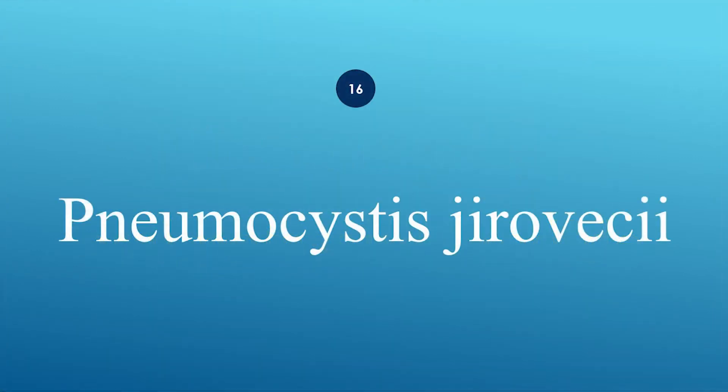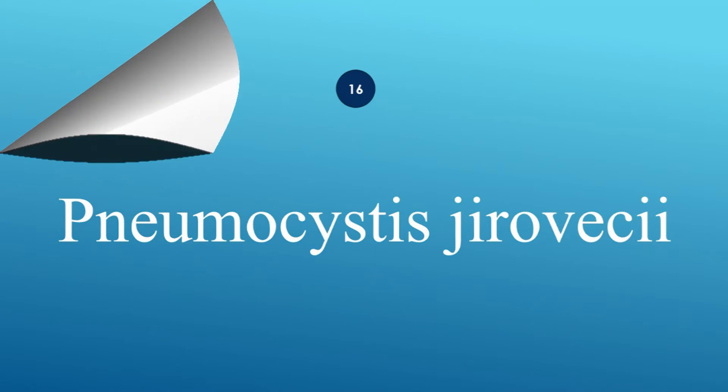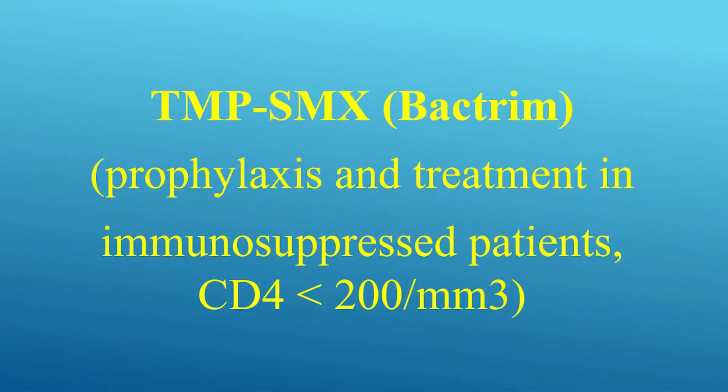What is the treatment for Pneumocystis jirovecii? Use trimethoprim-sulfamethoxazole, also known as Bactrim, for prophylaxis and treatment in immunosuppressed patients with CD4 less than 200 per cubic millimeter.